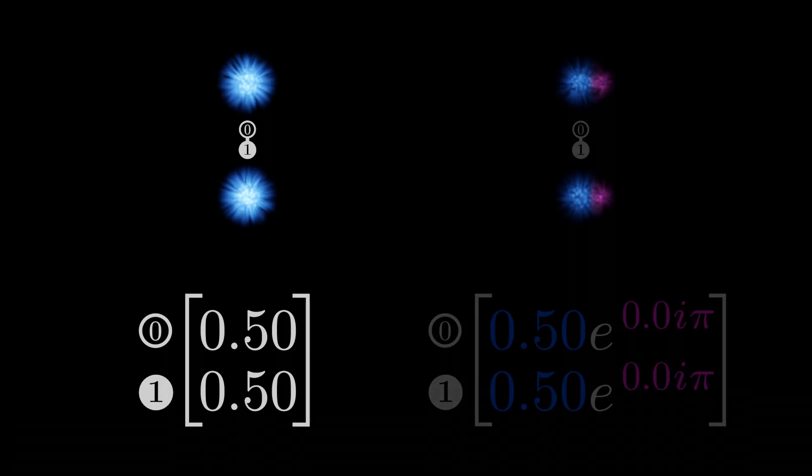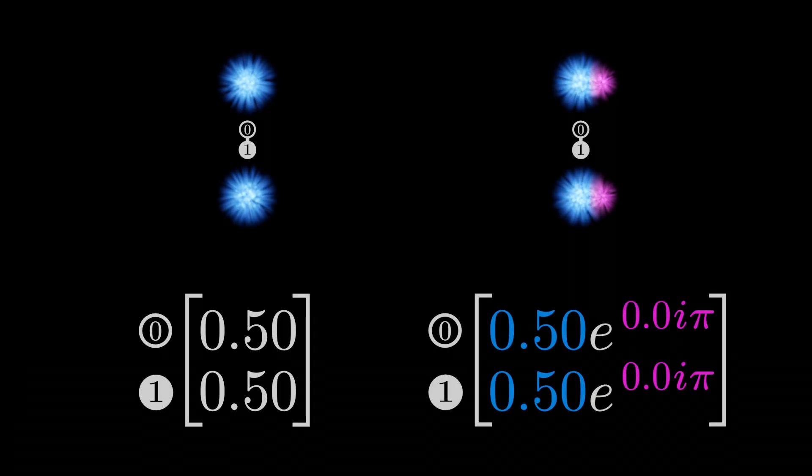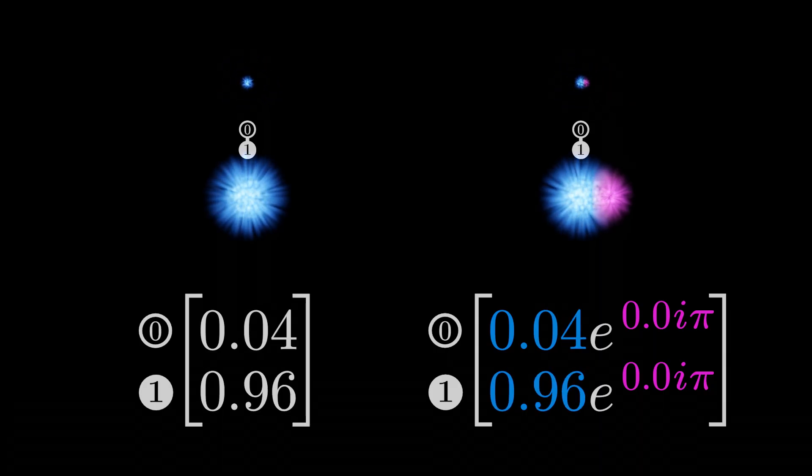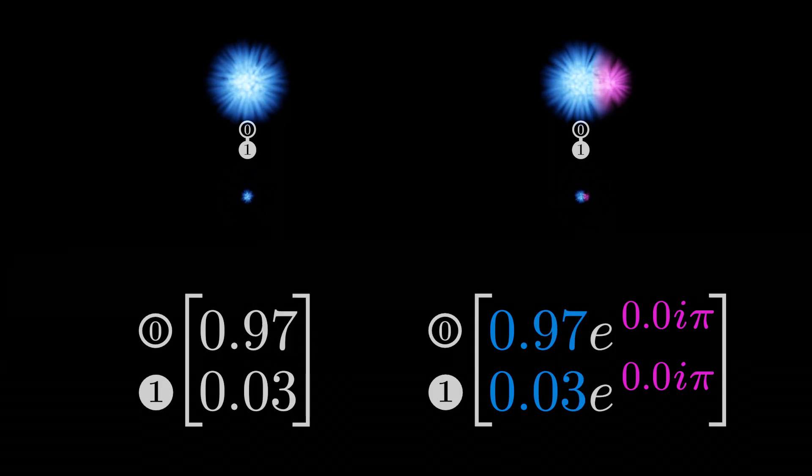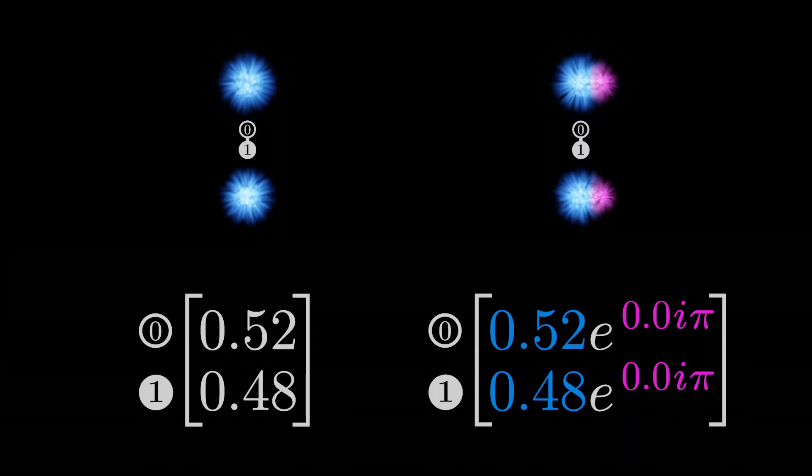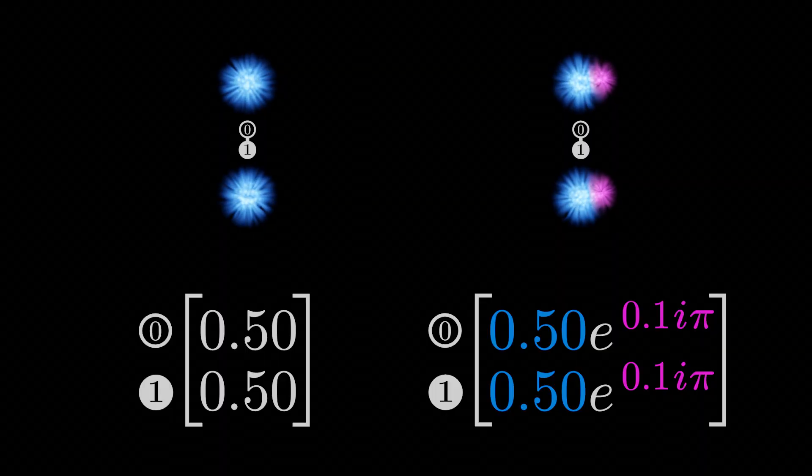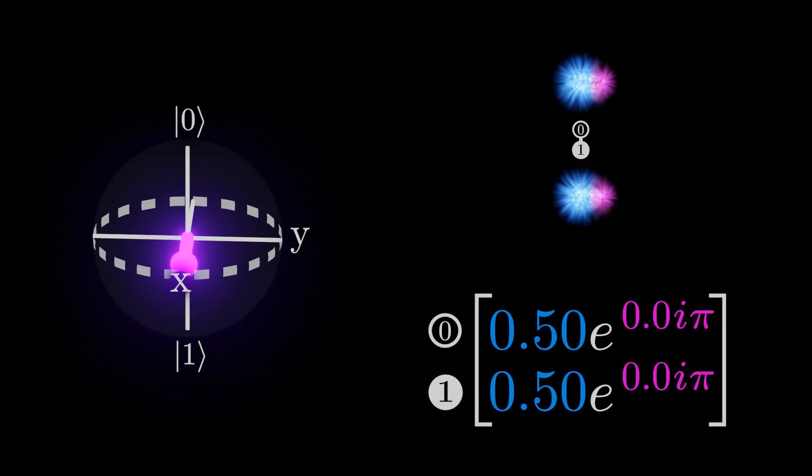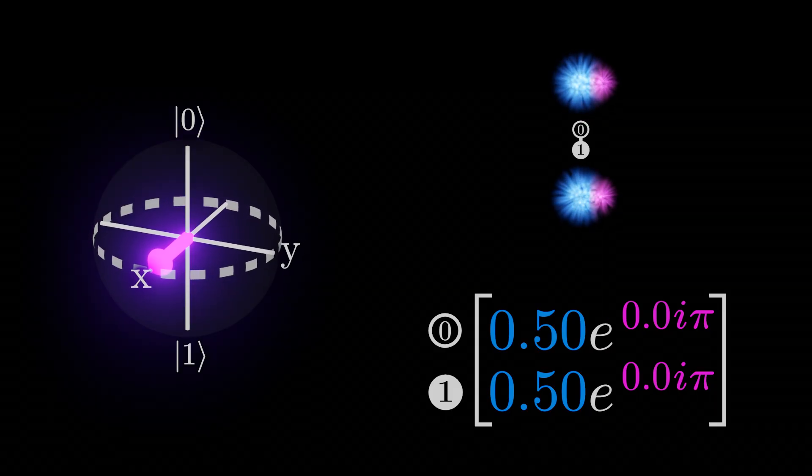To give us some extra data to work with, let's replace the real numbers we've been using with the complex numbers we looked at in a previous video. Notice that we were already using the amplitude of real numbers to denote how likely a particular measurement was. We can keep doing this when using complex numbers, which leaves the phase free to carry additional information. This replacement is immediately promising. There seems to be a nice parallel between the phase of these complex numbers and the angle around the z-axis on the Bloch sphere.